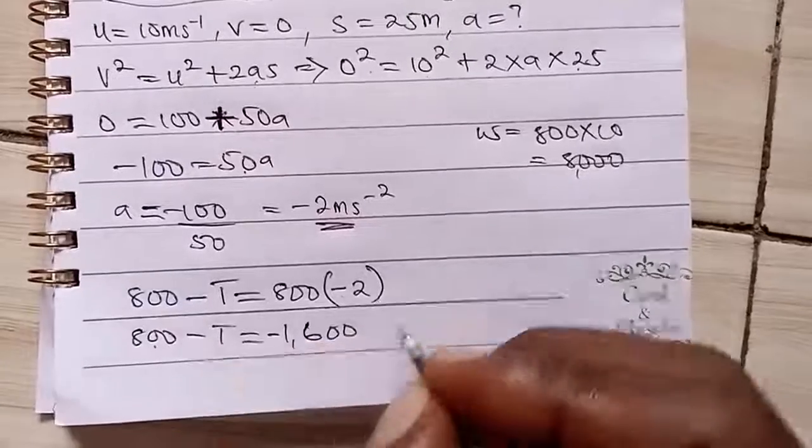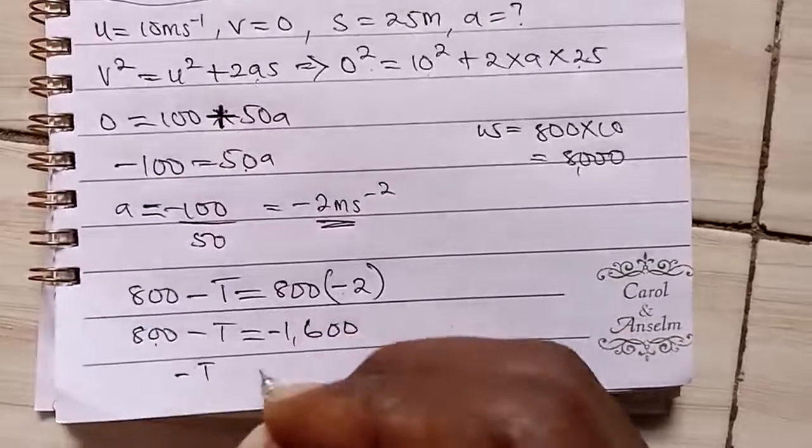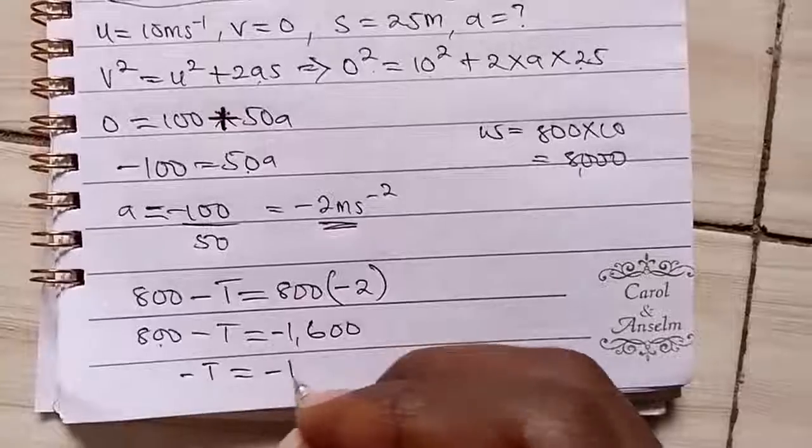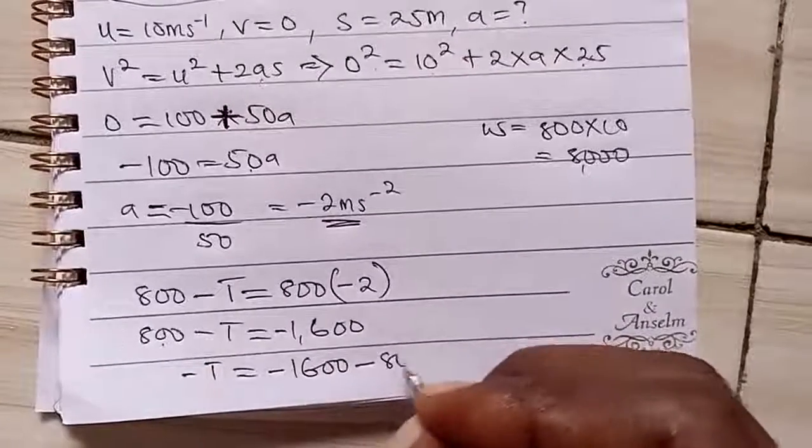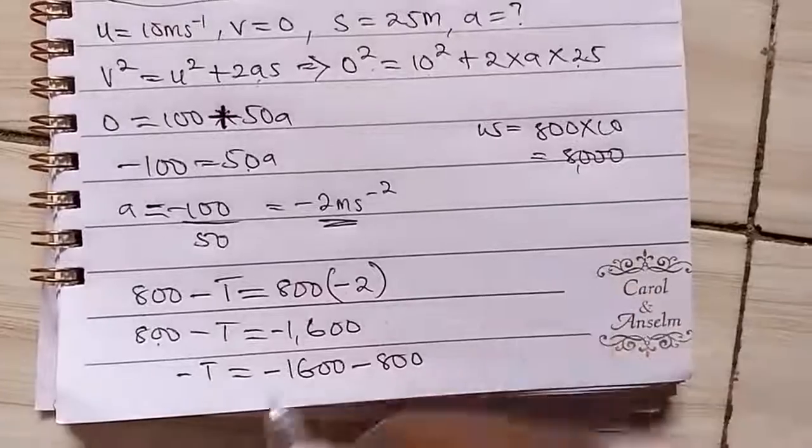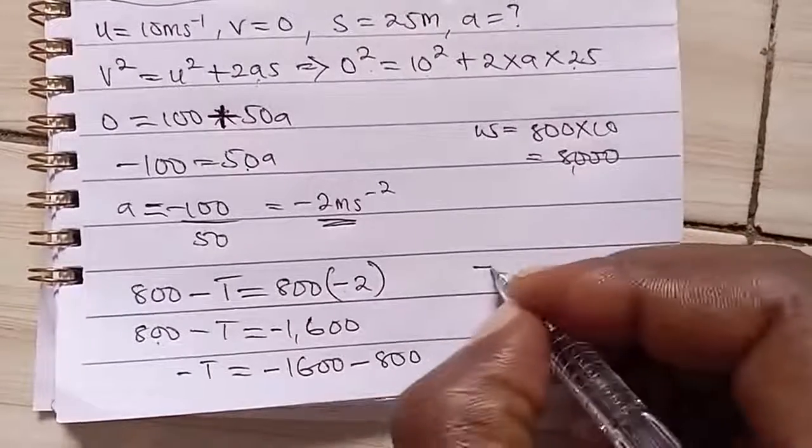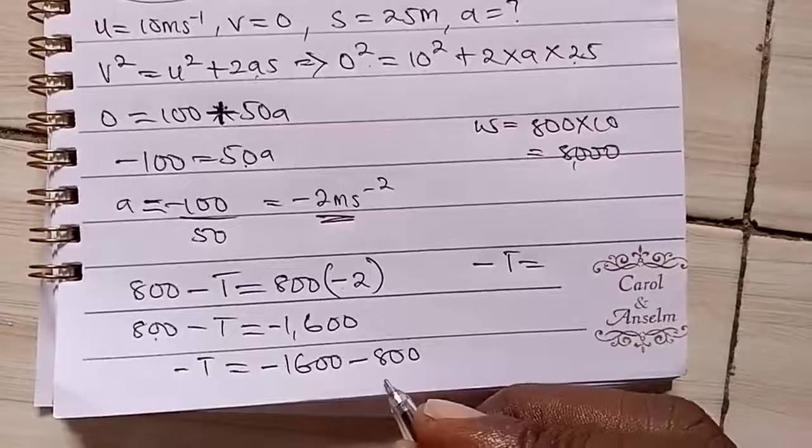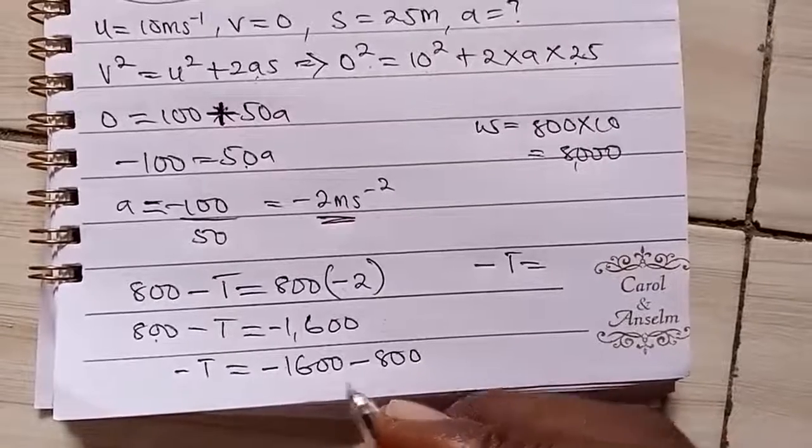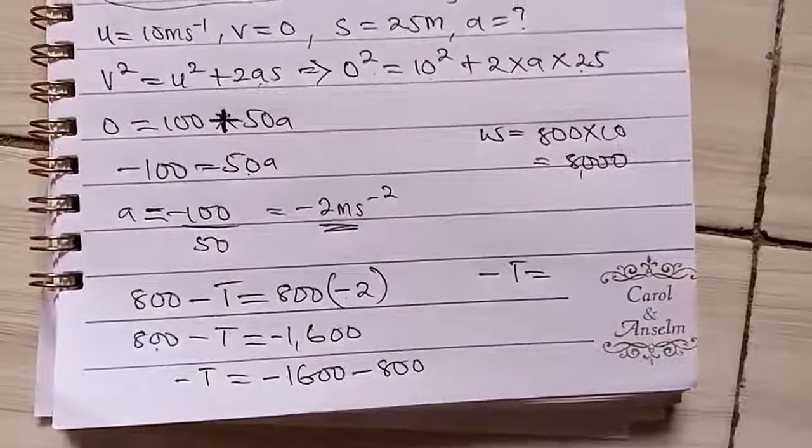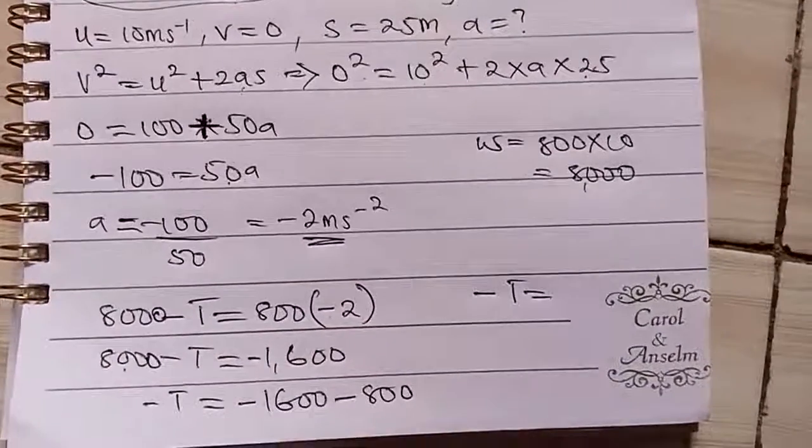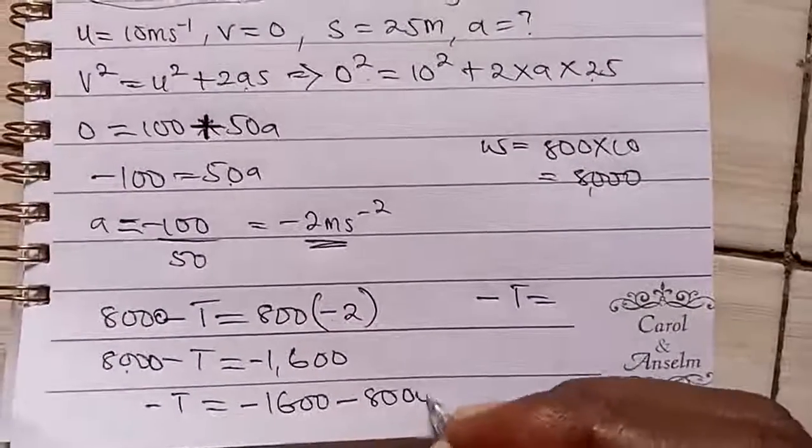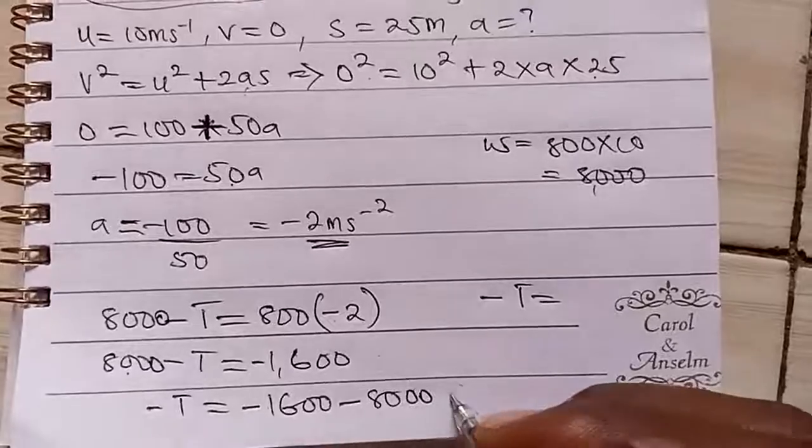So if we take this to this other side, minus T is equal to minus 1,600. If we move 8,000 to the right side, it becomes minus 8,000. If you add the two of them, you get that minus T is equal to minus 9,600.